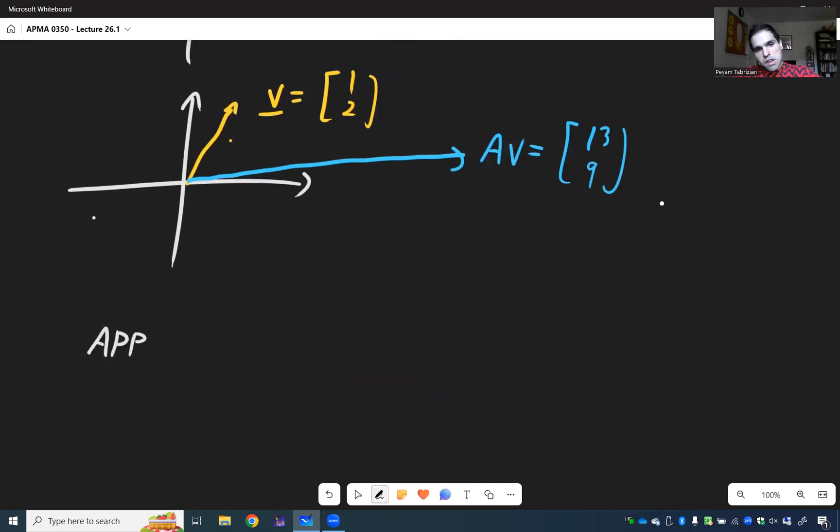App one, resonance effect, as we can see here. But the main application I want to talk to you about, actually, this is a bit of a digression, but there's a beautiful interpretation of eigenvectors and eigenvalues in terms of music.